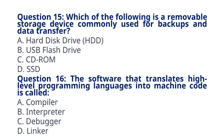Question 16: The software that translates high-level programming languages into machine code is called — A. Compiler. The correct answer to question 16 is option A: Compiler. Explanation: A compiler translates high-level programming languages into machine code before execution.